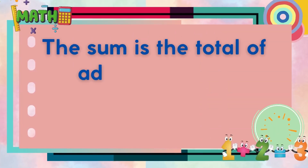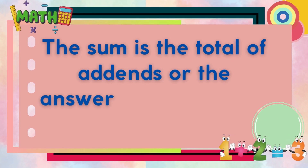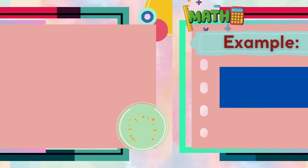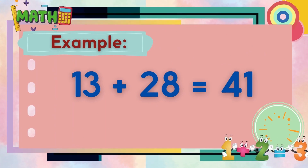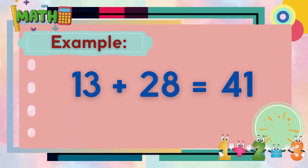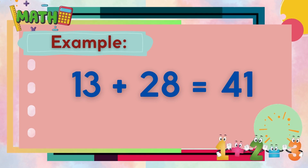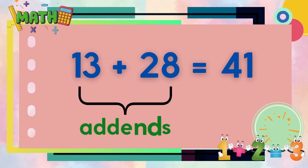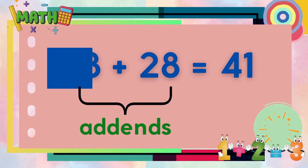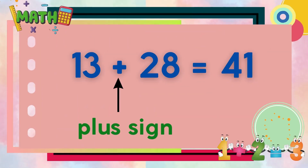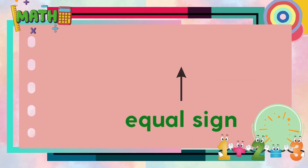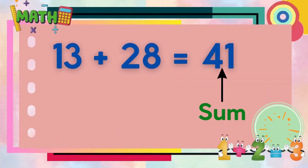The sum is the total of addends, or the answer in the addition sentence. Now let's have this example: 13 plus 28 is equal to 41. 13 and 28 are the addends, the sign between them is the plus sign, next is the equal sign, and 41 is the sum.